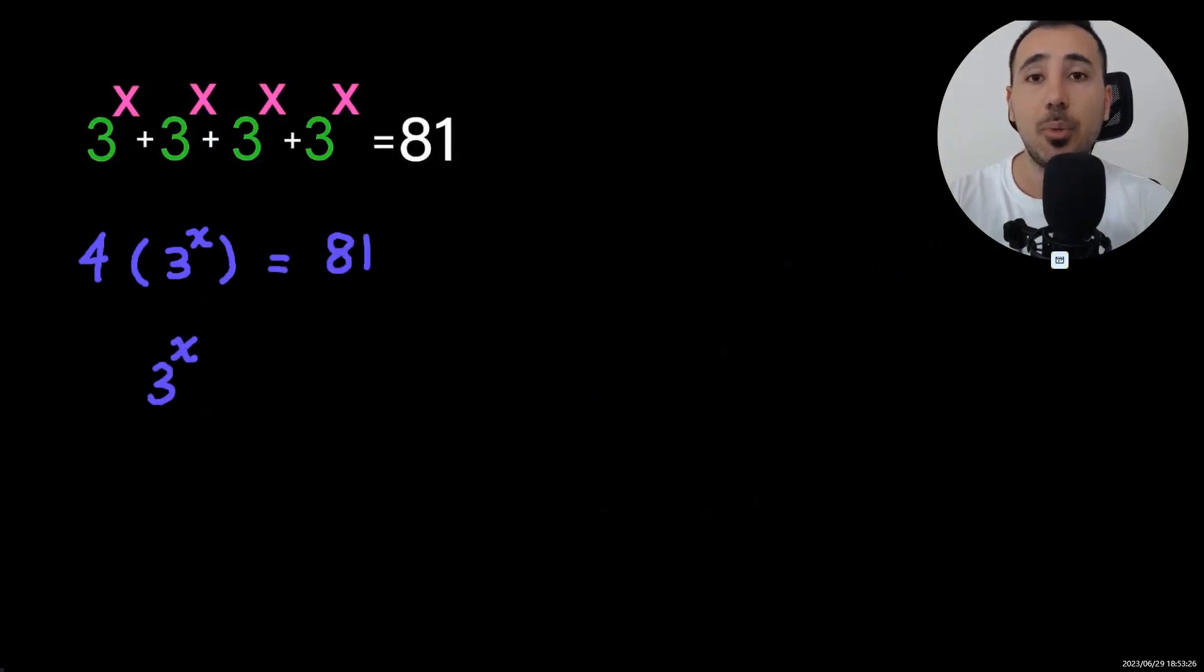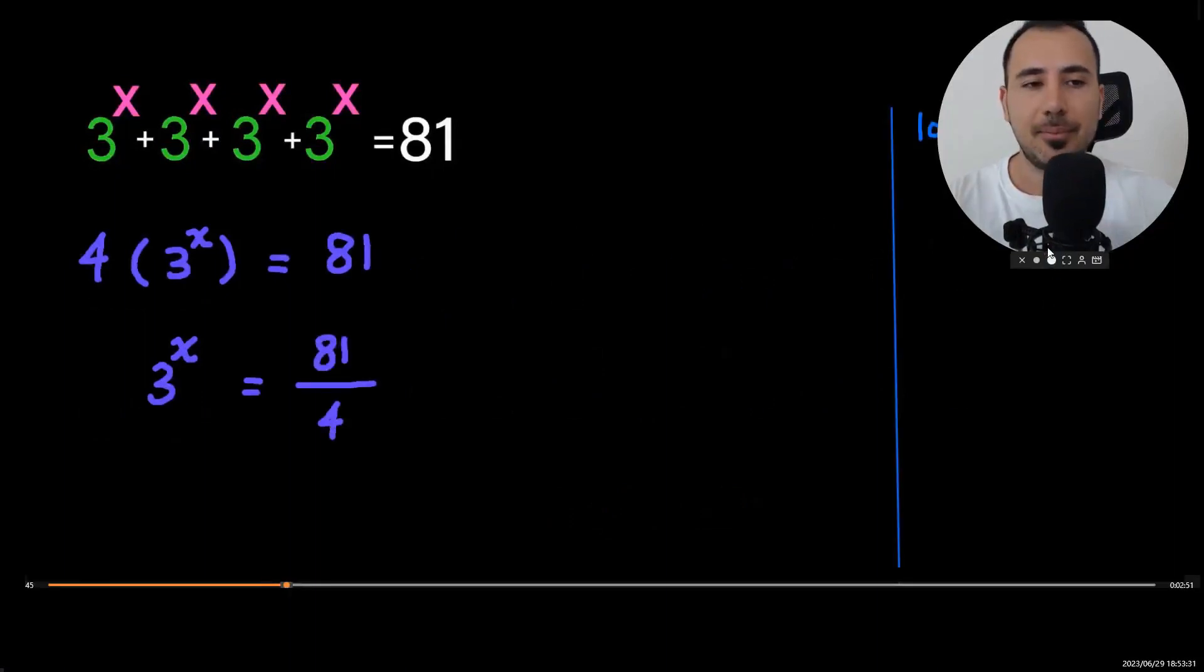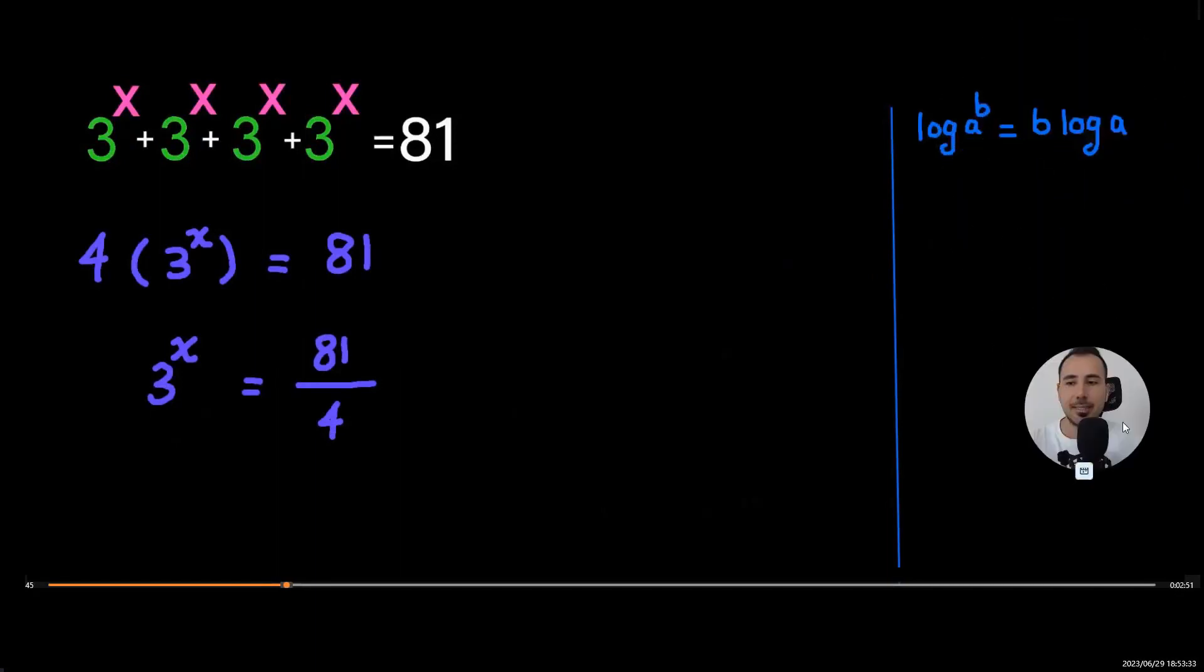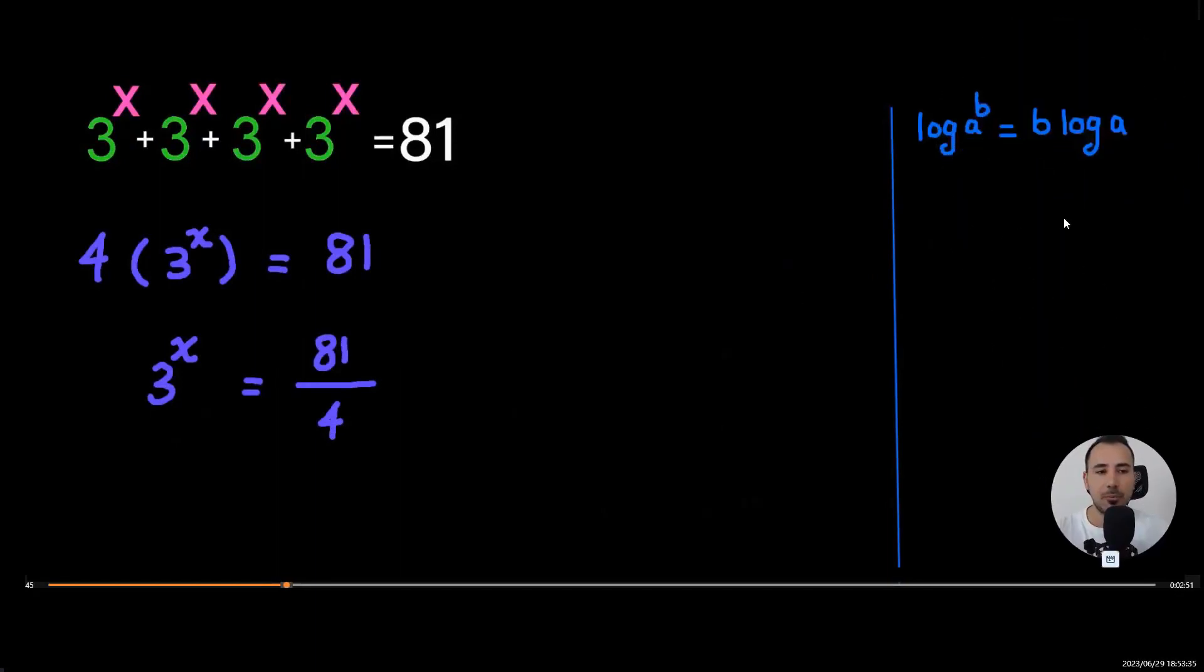Let's divide both sides by 4. And how to deal with this? We need logarithm rules. So I'm going to write them one by one here.